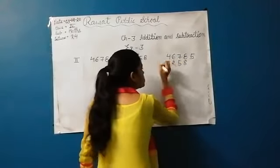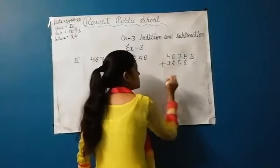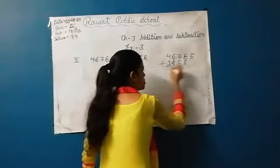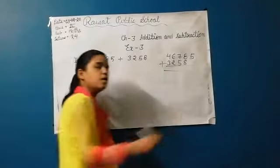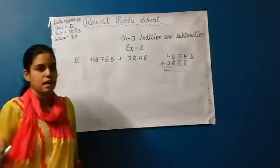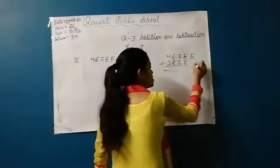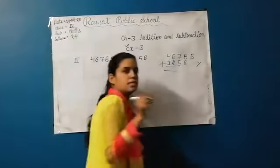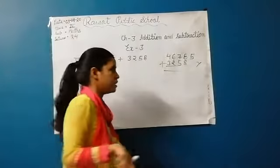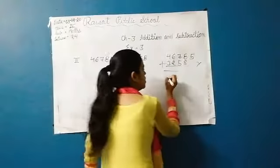Mostly students will arrange these questions by starting from the following numbers from the front. But this is wrong — they should not arrange the questions starting from the front. Why?